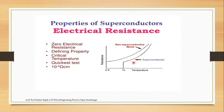The substance which shows this effect is called a superconductor. At a low temperature it is called a superconductor. The substance which shows superconductivity at a low temperature is called a superconductor.